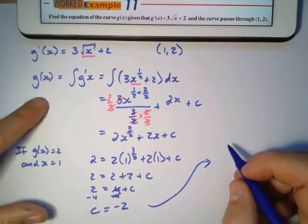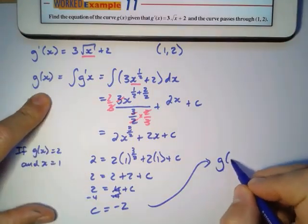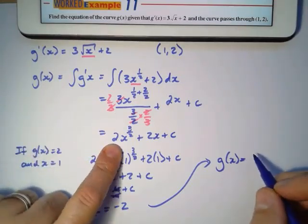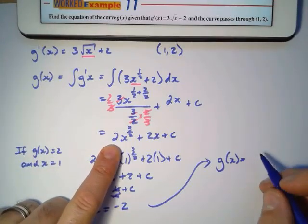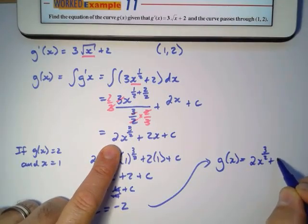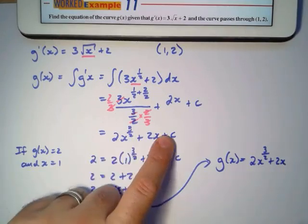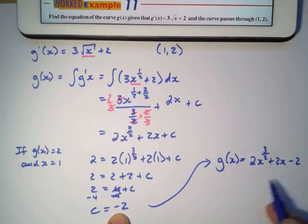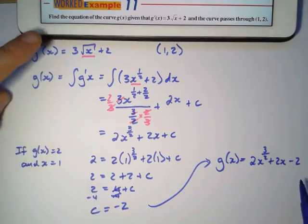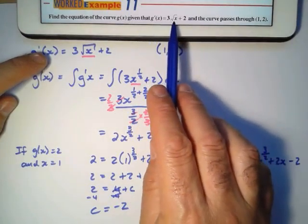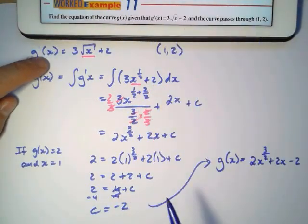It means that g(x) equals 2x to the power 3 over 2 plus 2x plus C. And C is negative 2. So that's the equation of the curve that goes where this is the gradient and it goes to that point.